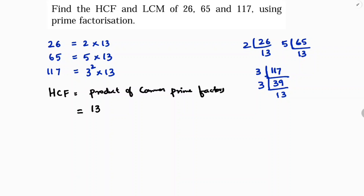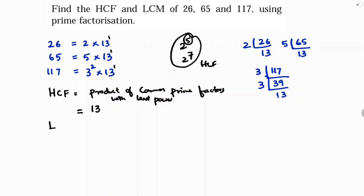To clarify: HCF is the product of common prime factors with the least power. For example, if common factors are 2⁵ and 2⁷, the least power is 2⁵, so HCF would be 2⁵. In our case, the common factor is 13 with power 1, so HCF = 13.